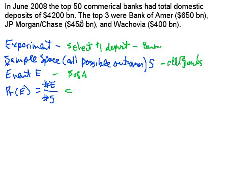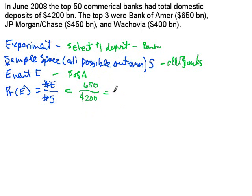This is similar to the experimental value of tossing coins, except instead of tossing a coin 10 times, I would repeat it 4.2 trillion times. Among all those 4.2 trillion draws, what fraction of the time would I get Bank of America? Well, it would come up 650 billion times. So the probability comes out to slightly more than 15%.